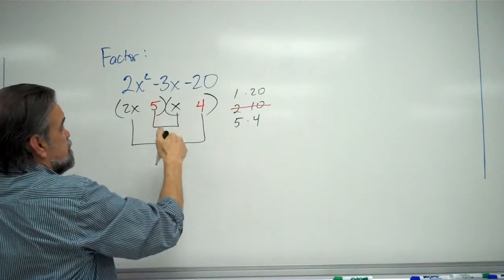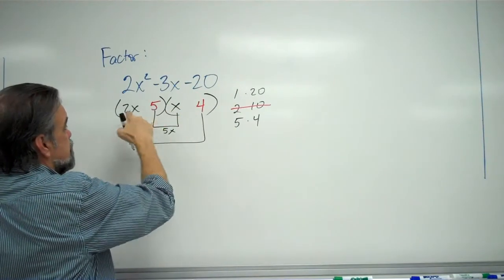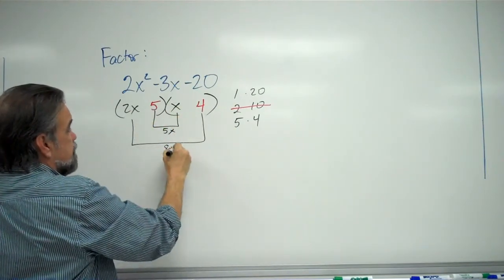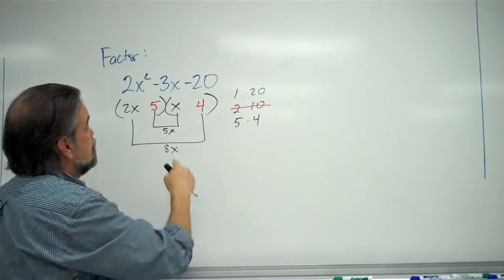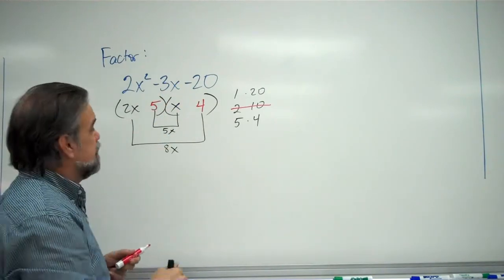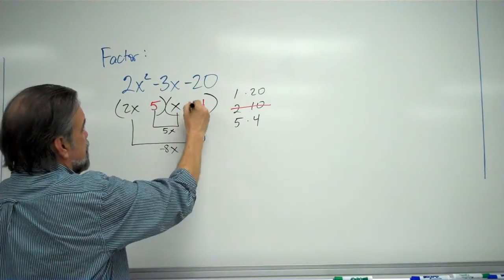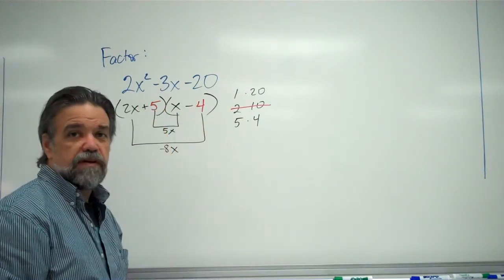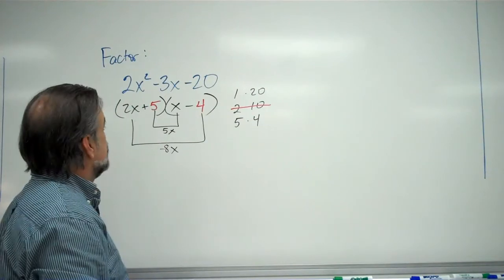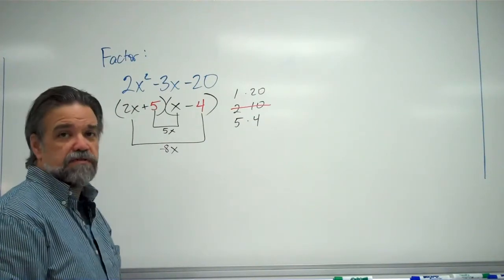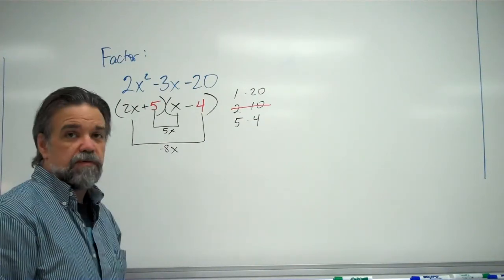So now, 5 times x is 5x. 2x times 4 is 8x. I want them to combine to be negative 3x. So that means I want this one to be negative. So that means this has to be negative and this has to be positive. And there's my answer. The factor is 2x plus 5 times x minus 4.